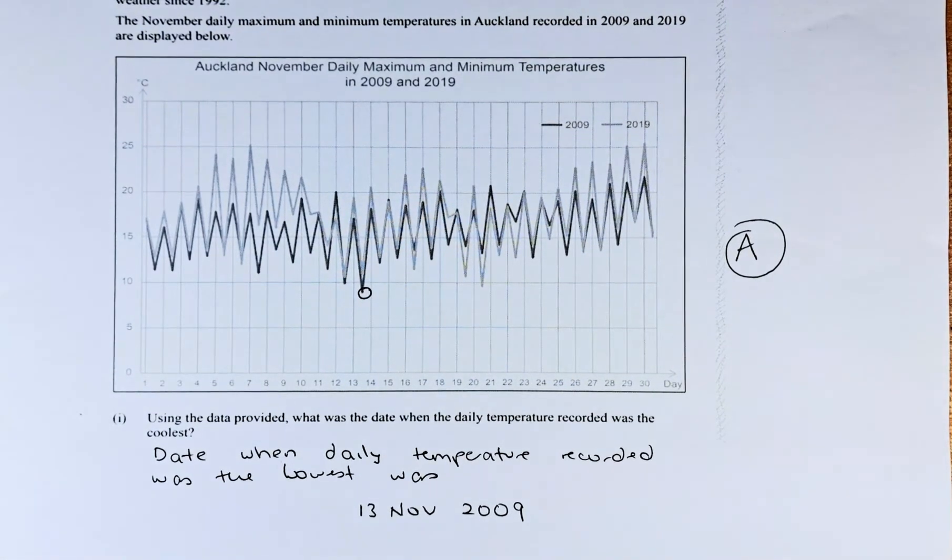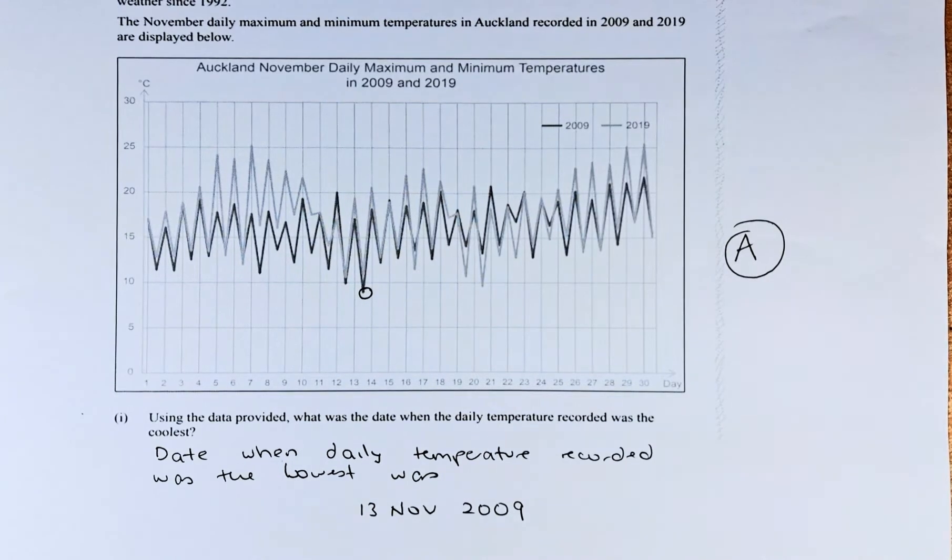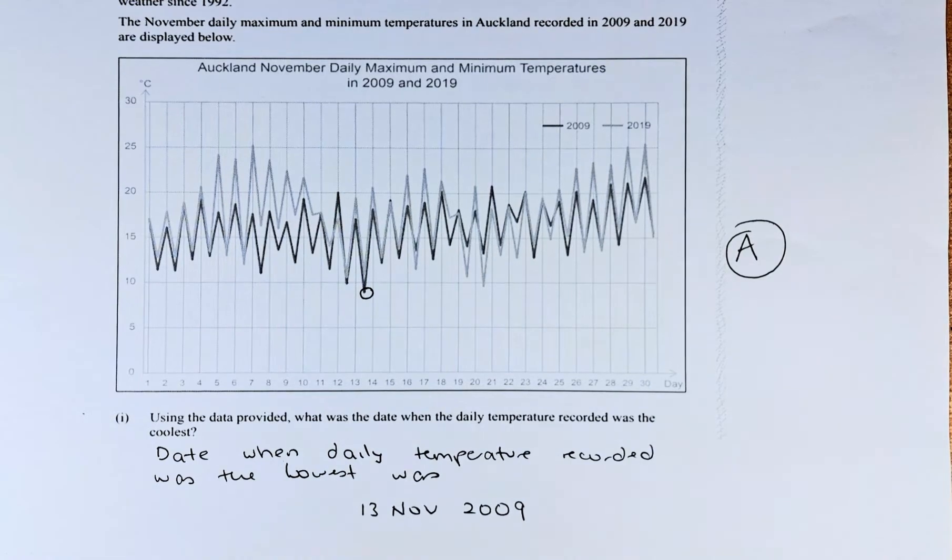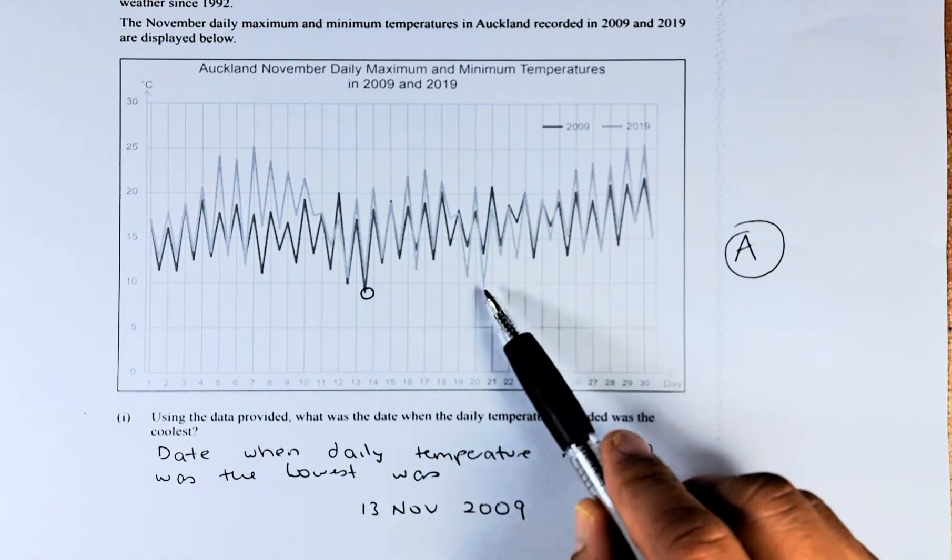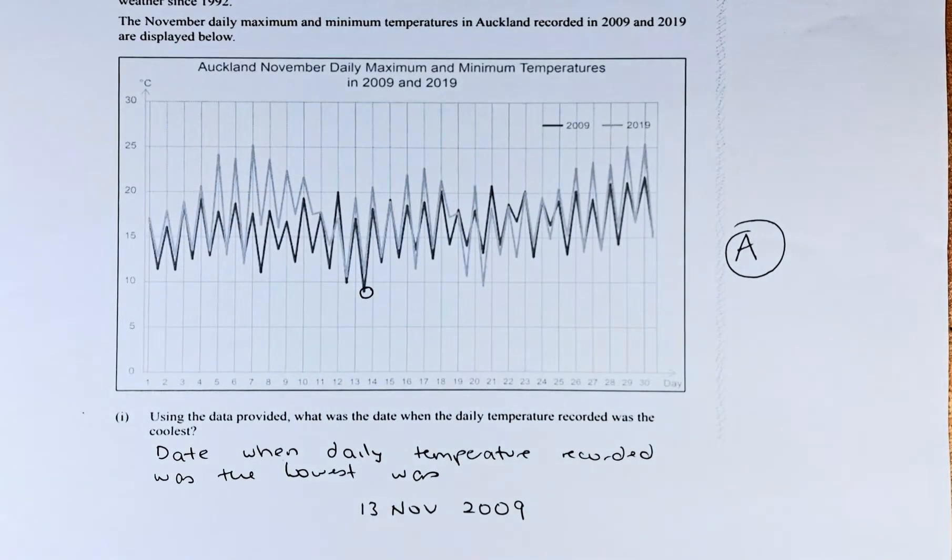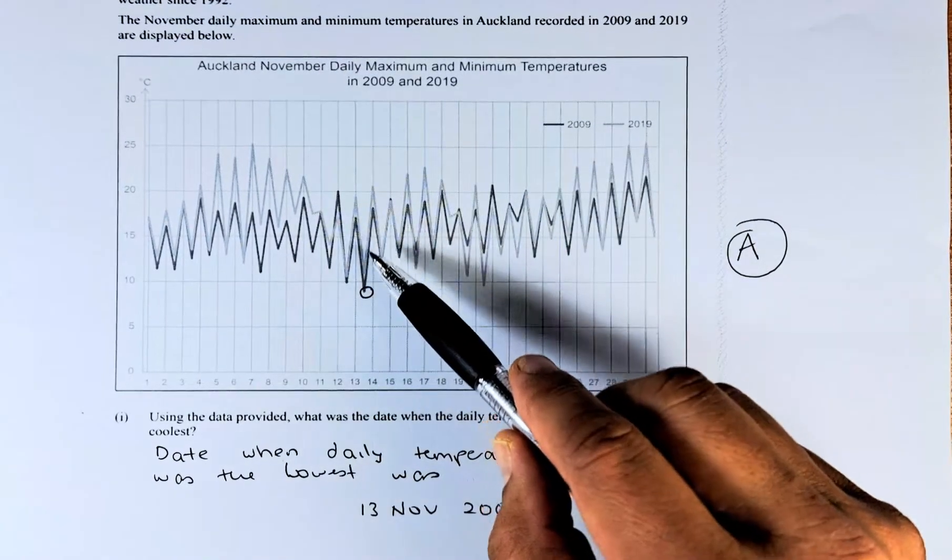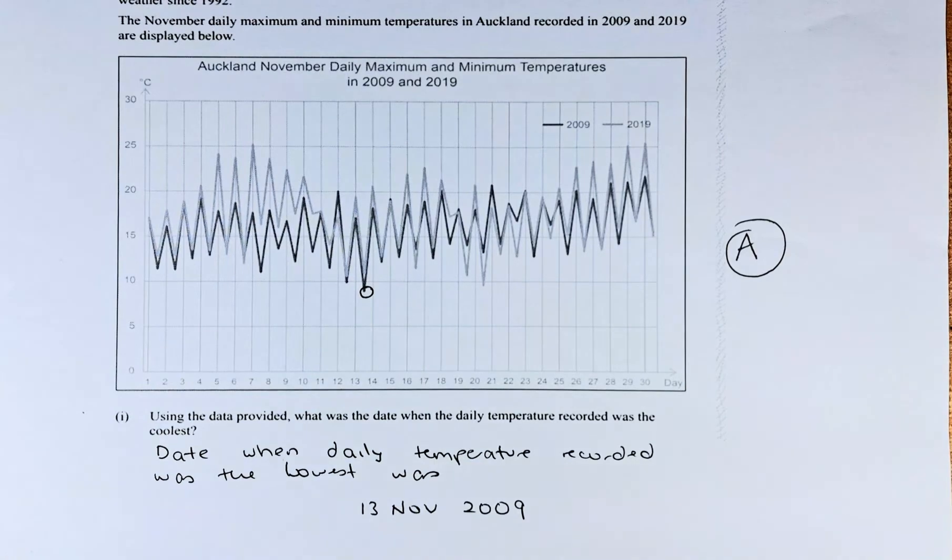The question is, using the data provided, what was the date when the daily temperature recorded was the coolest? Looking at the dark line and the lighter line, the lowest temperatures are these 2 days. This is lower than this, so the lowest daily temperature recorded was in the black line, which is 2009, and it's found on November 13th. So that will give you an achieve in this question.